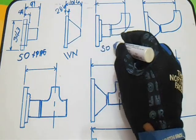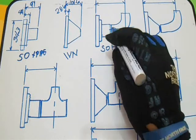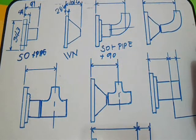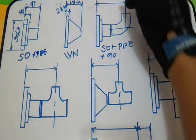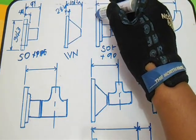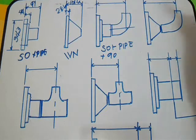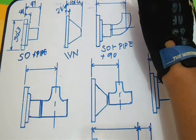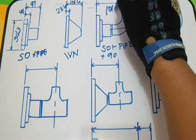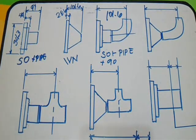Next, SO plus pipe plus 90 degree elbow. I will measure here from the center of elbow to the slip-on flange. We have 101.6.